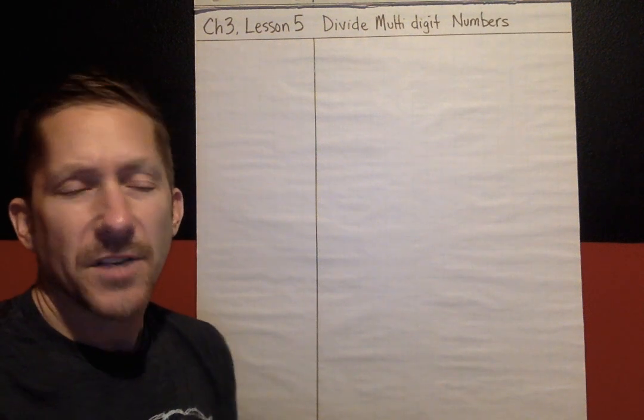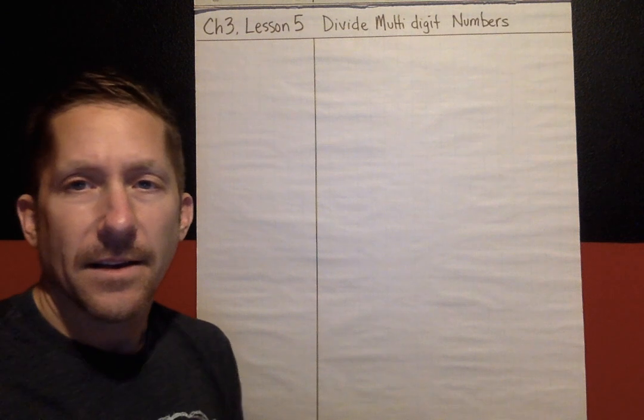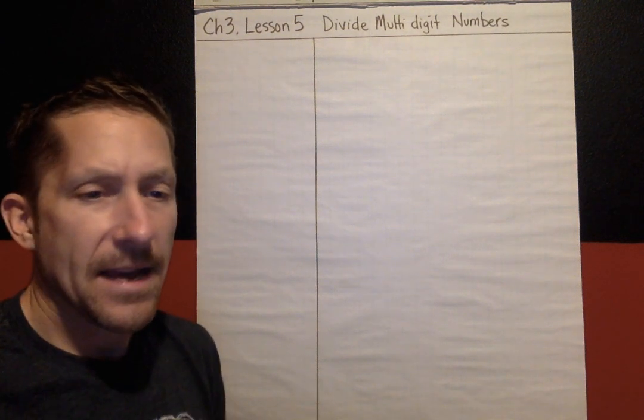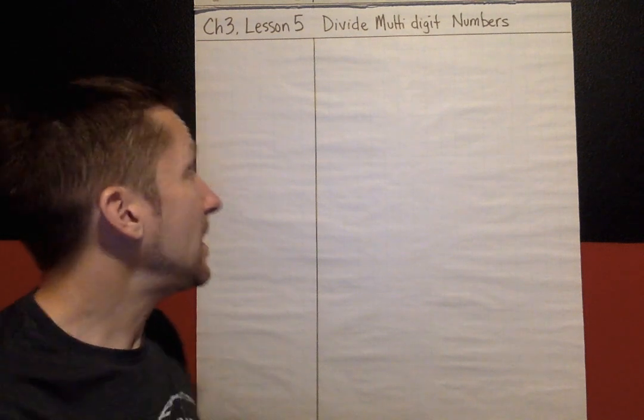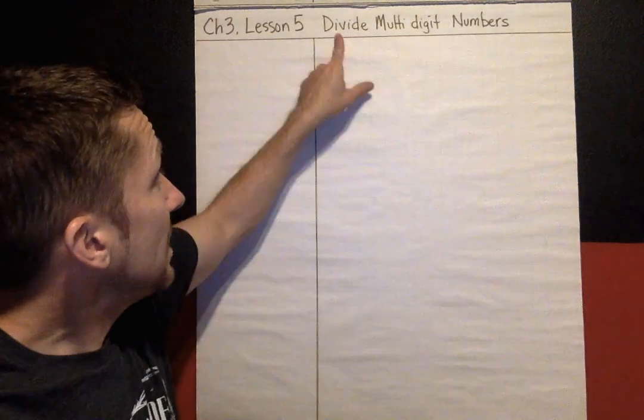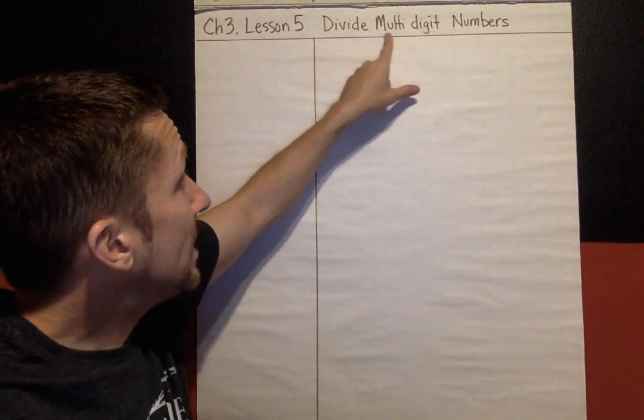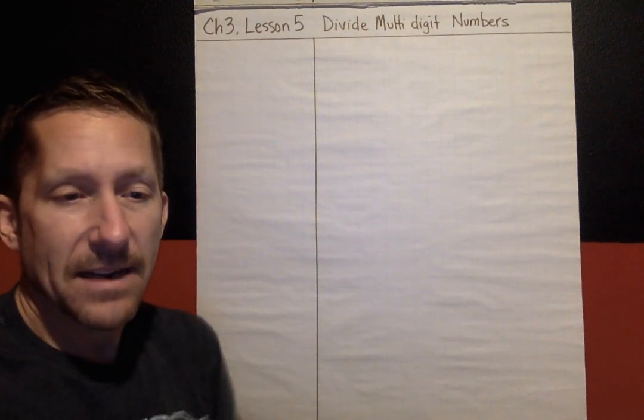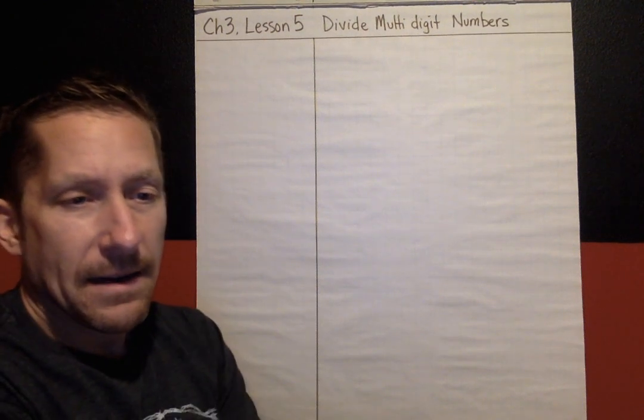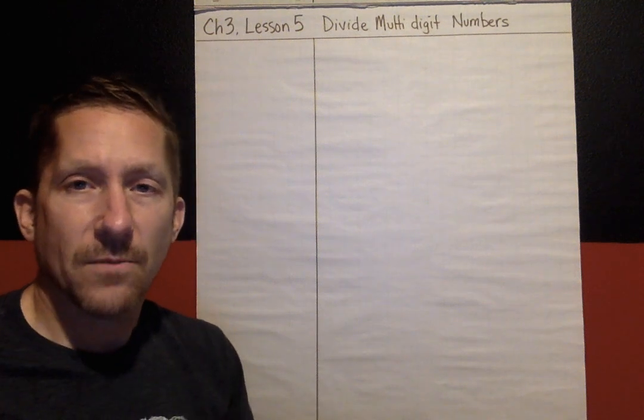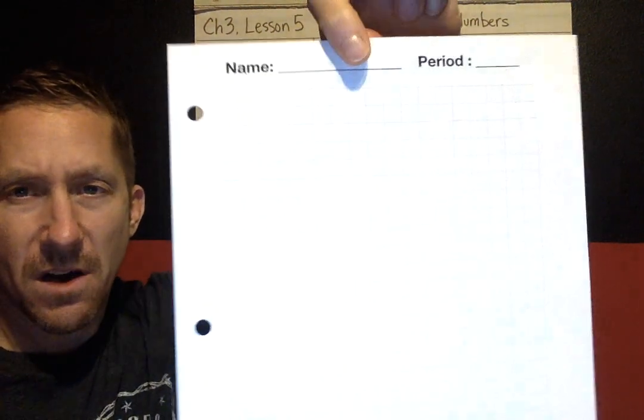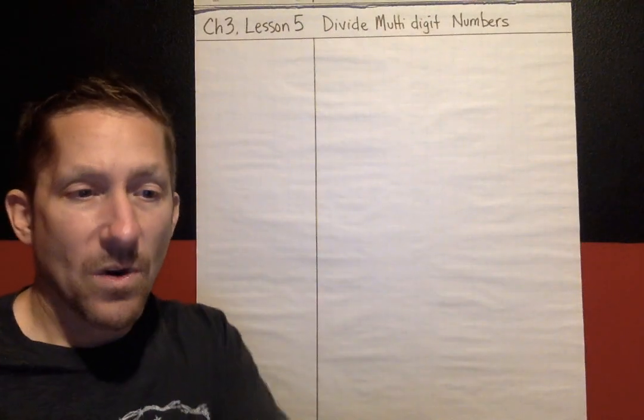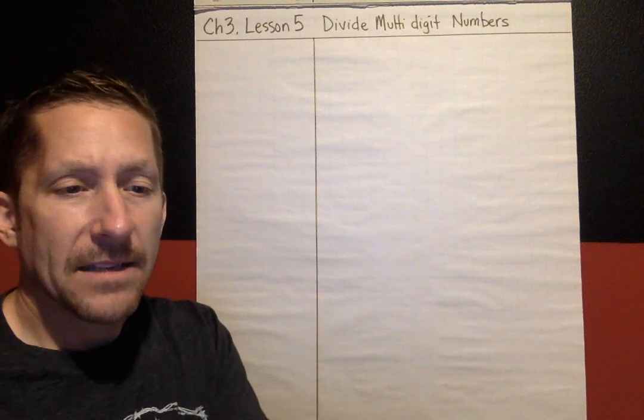Hey boys and girls, welcome to Chapter 3, Lesson 5. The subject of Lesson 5 is on the screen and you should write that down on your Cornell note page or in your comp book. It is How to Divide Multi-Digit Numbers. So after this lesson, hopefully you can do that and you're ready to practice.